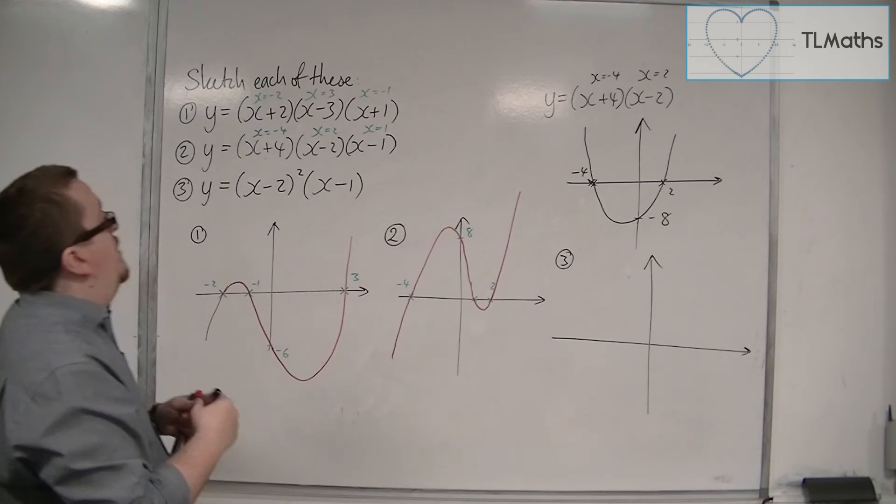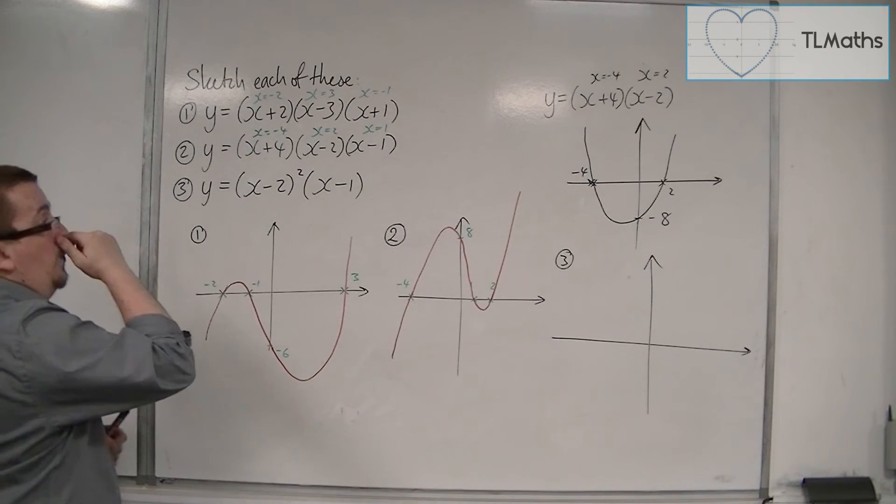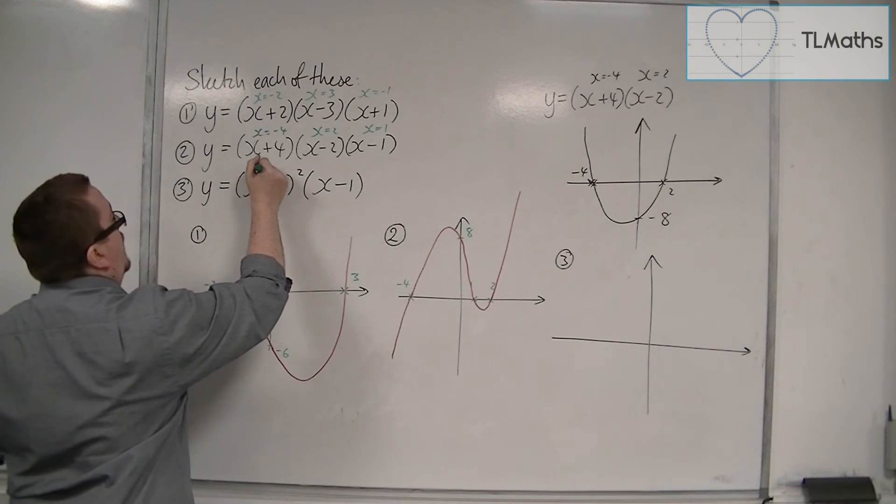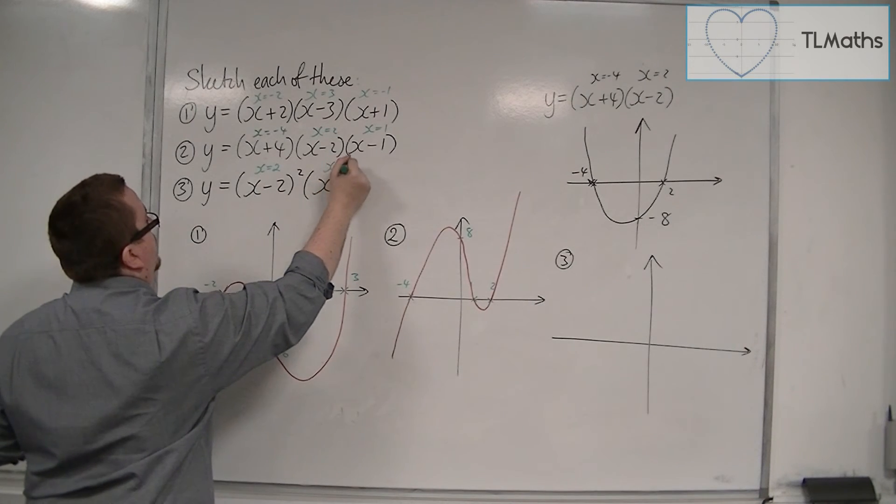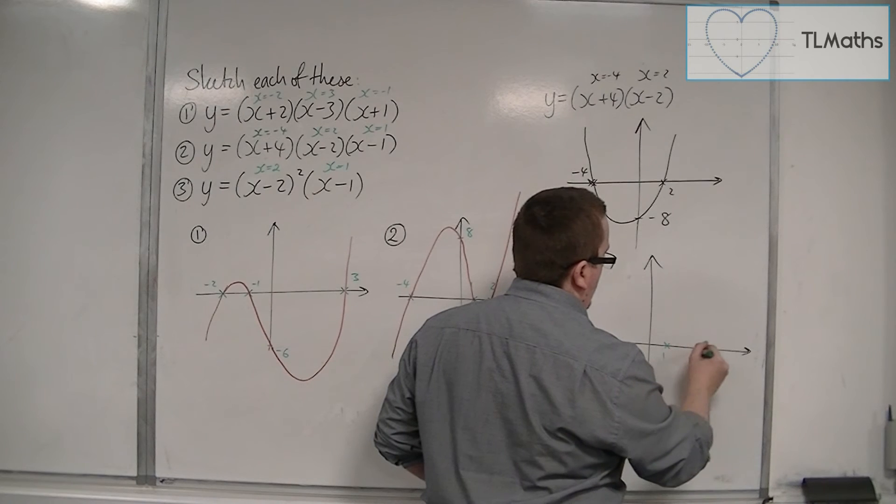Let's look at the third one. Now, number 3, we have something interesting going on. We've got this x minus 2 squared. Now, already we can identify that it must be crossing the x-axis at 2 and 1.